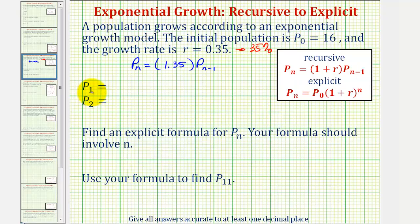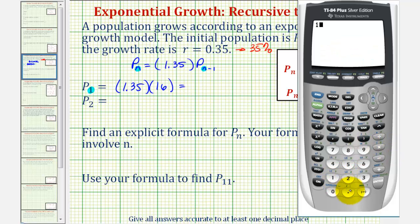When we find p sub one, n equals one, so we substitute one in both places. P sub one equals 1.35 times p sub one minus one, that's p sub zero, which equals 16. 1.35 times 16 equals 21.6.